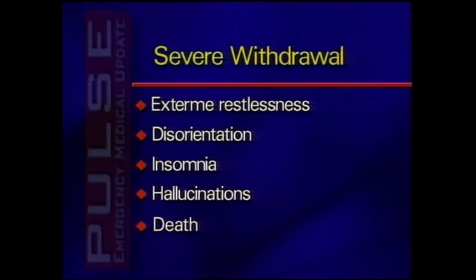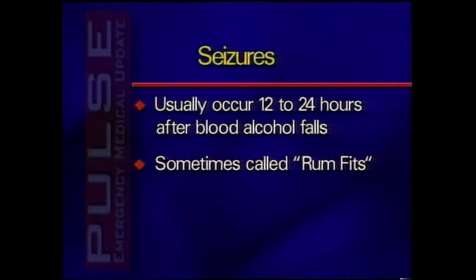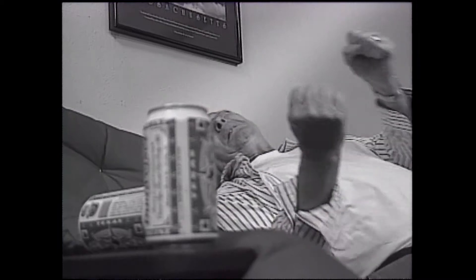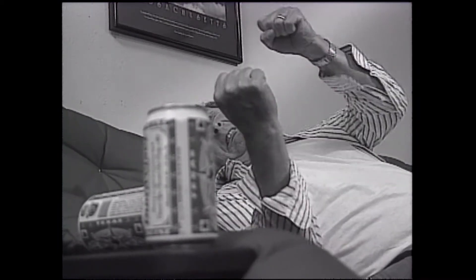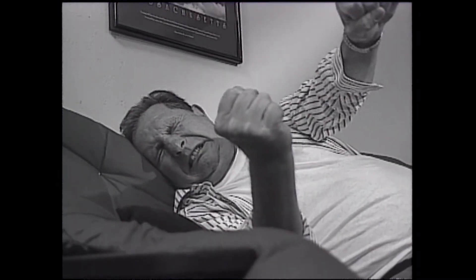Hyperthermia, elevated temperatures, and seizures are associated with increased mortality. Seizures usually occur 12 to 24 hours after the blood alcohol level falls. These are sometimes called rum fits or alcoholic epilepsy and are typically grand mal, tonic-clonic in nature. Seizures may also occur as a result of related conditions — for example, alcoholics are susceptible to hypomagnesemia, low blood levels of magnesium, due to decreased dietary intake, vomiting, diarrhea, and other factors. Hypomagnesemia can cause tremors, confusion, seizures, and dysarrhythmias.